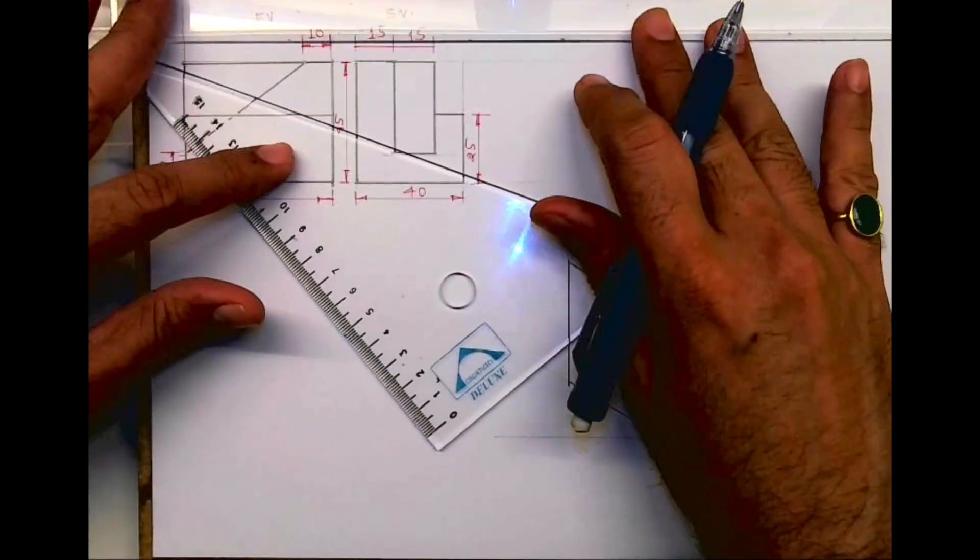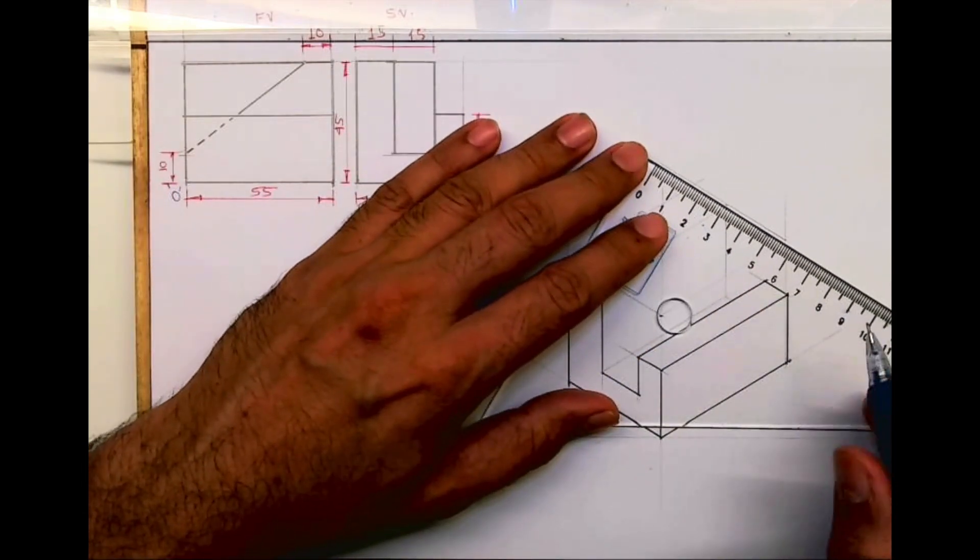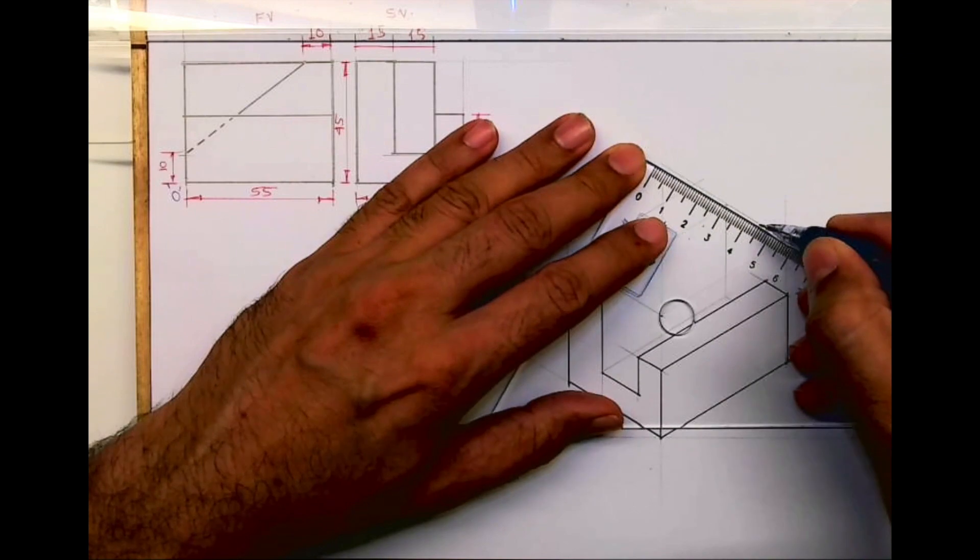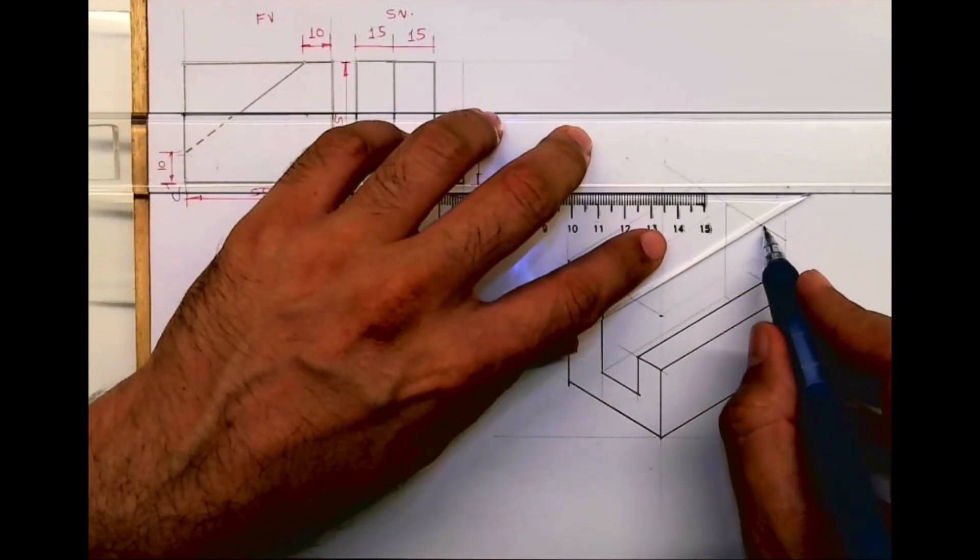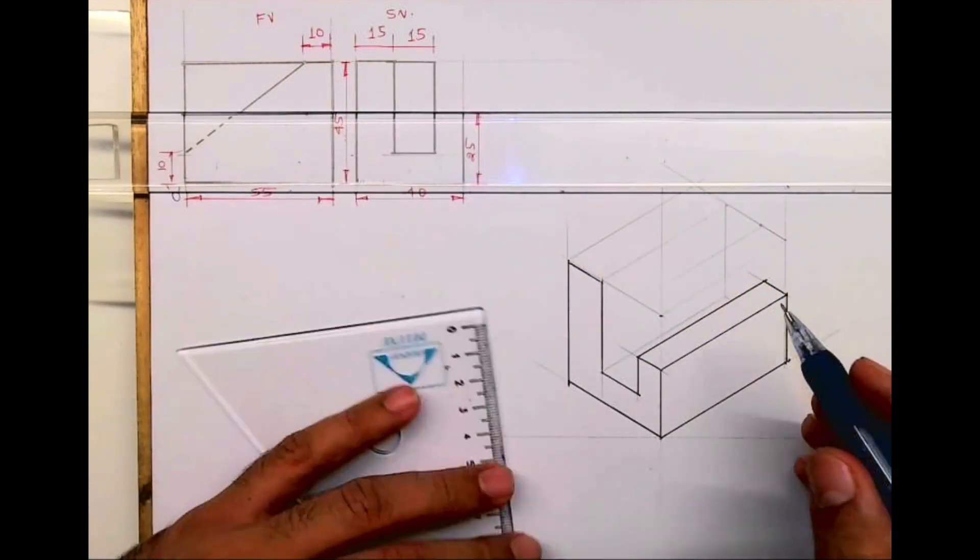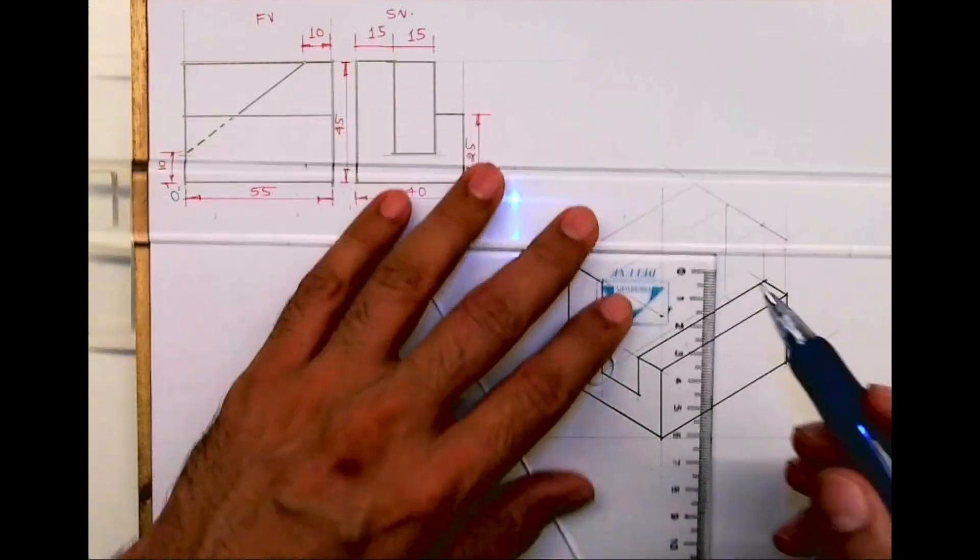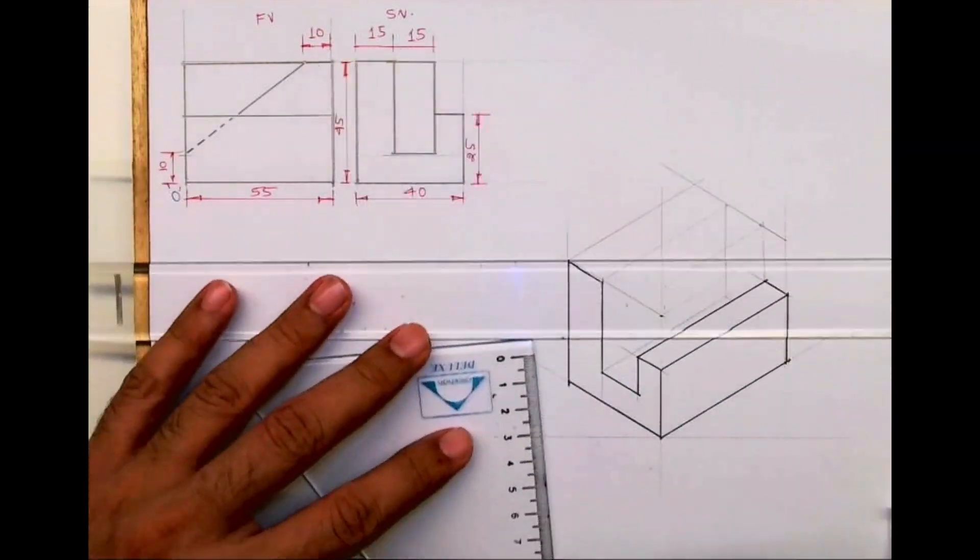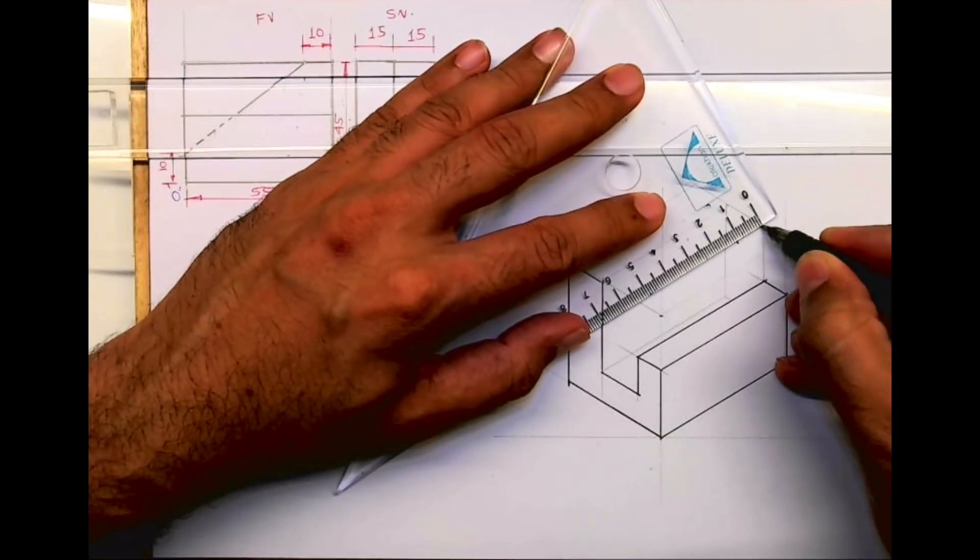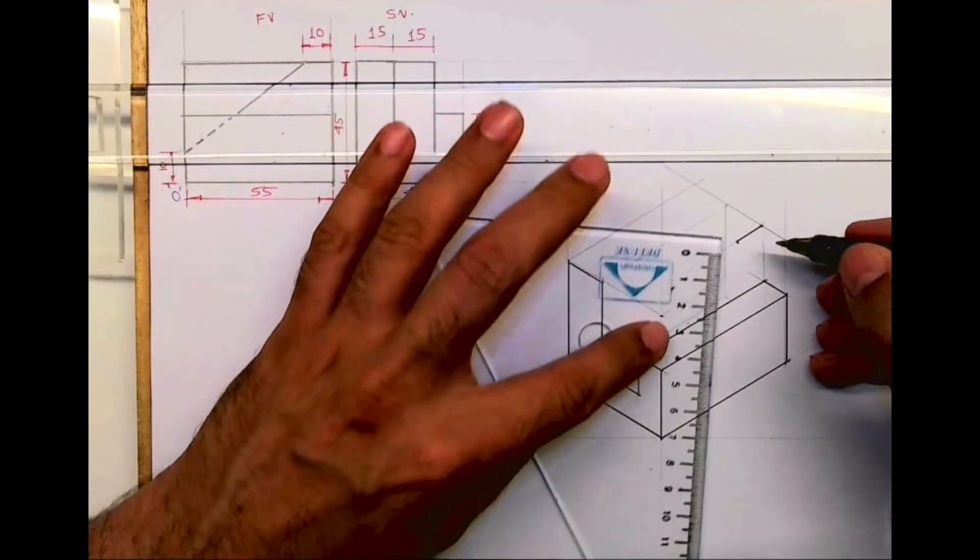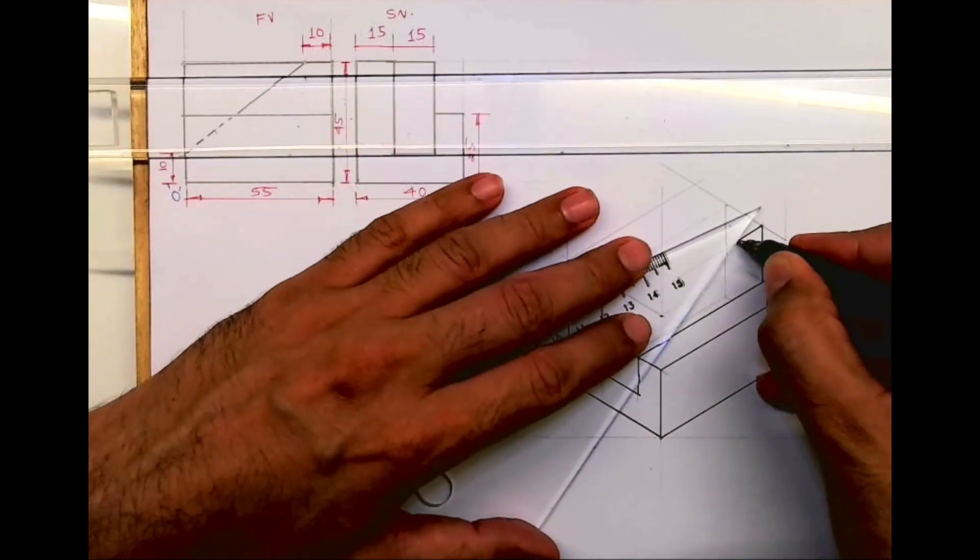This part we have the slope. If you see this, it is 15, so I will take 15 here. I will draw a line 10mm. See this, this part we are trying, and join this to this.